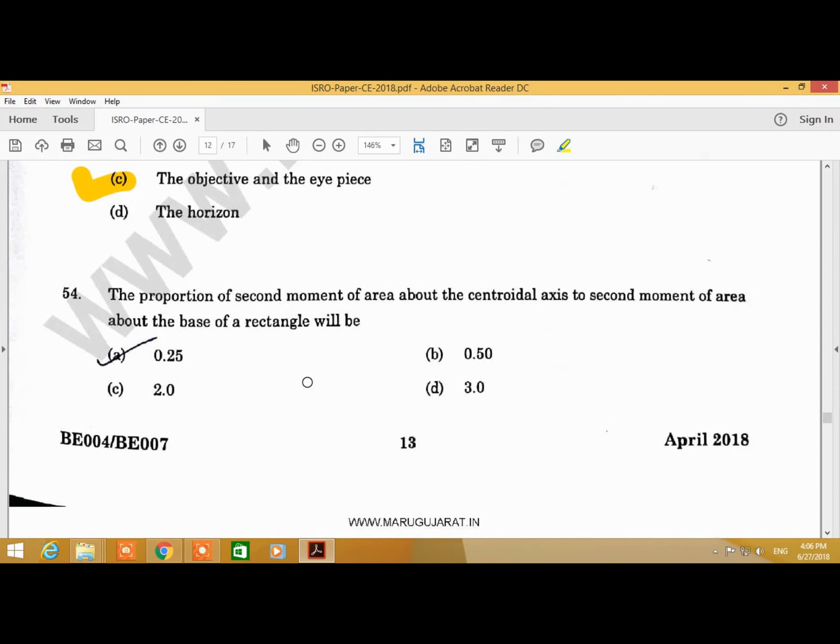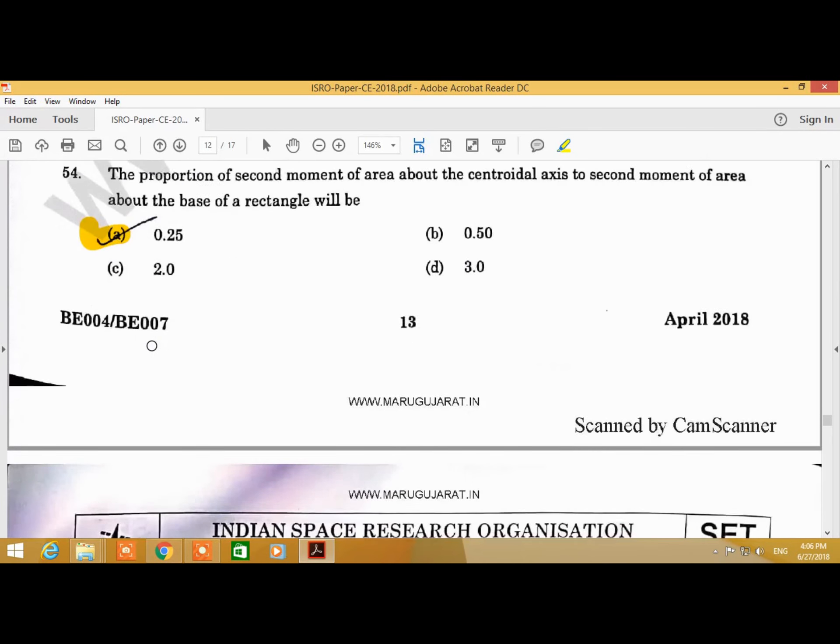Question Number 54: The proportion of second moment of area about the centroidal axis to second moment of area about the base of a rectangle will be. Answer is A, 0.25.